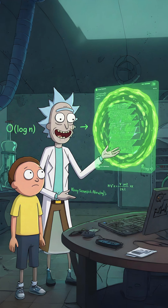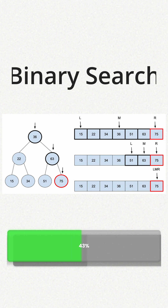But if your array is sorted, Morty, that's when you can use binary search. Cut your search space in half each time. That's O(log n) time, which is exponentially better.